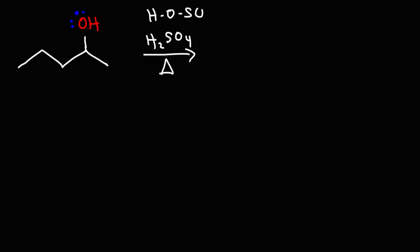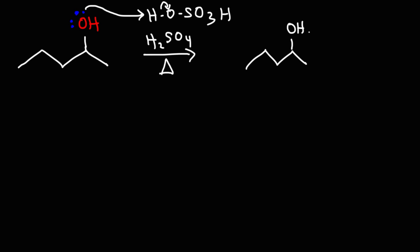First, I'm going to rewrite sulfuric acid. Step one is protonation. The OH group is a bad leaving group, but once you add a hydrogen to it, it becomes a much better leaving group. And the presence of heat will facilitate the escape of the leaving group.